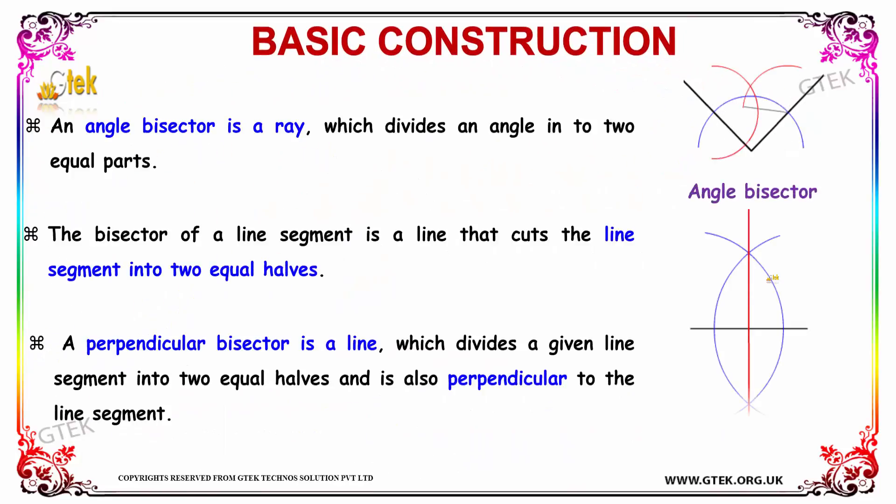Let's see some other things in terms of basic constructions. The angle bisector is considered to be a ray which divides an angle into two equal parts. You can see the example over here how the angle bisector is defined. The bisector of a line segment is considered as a line that cuts the line segment into two equal halves.